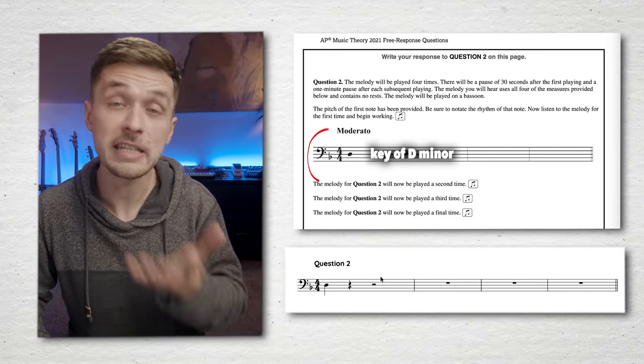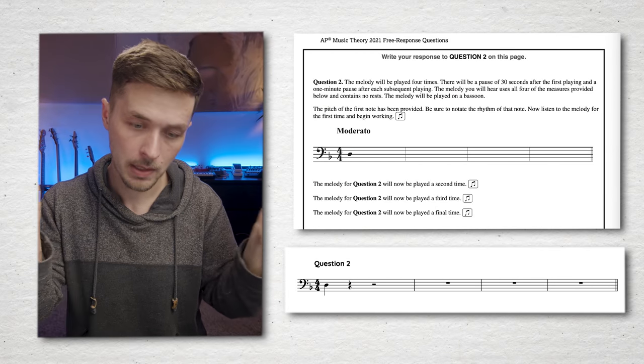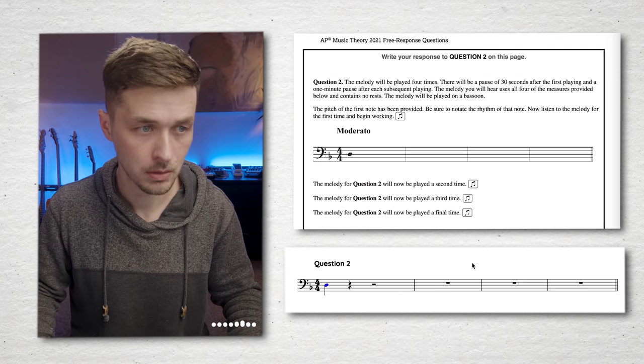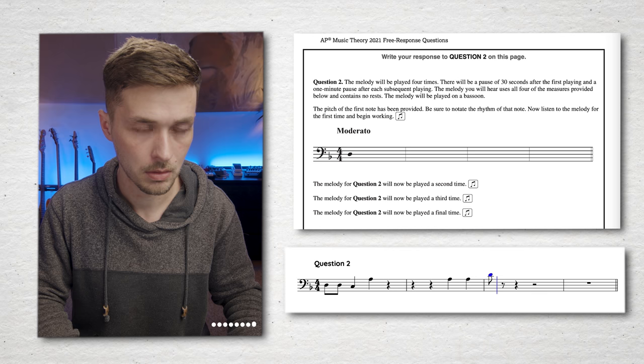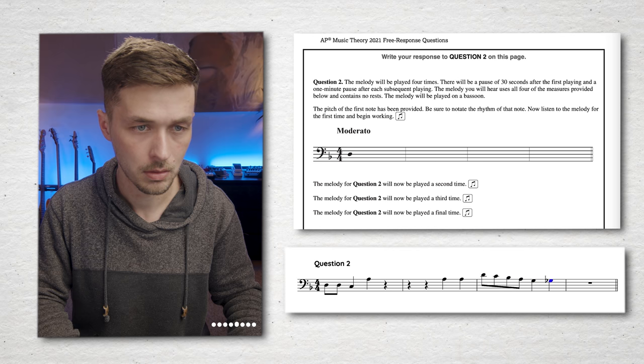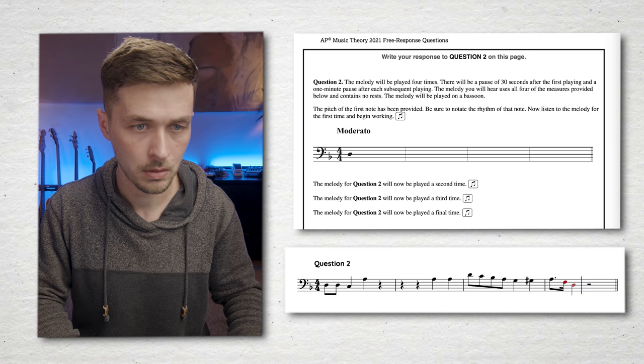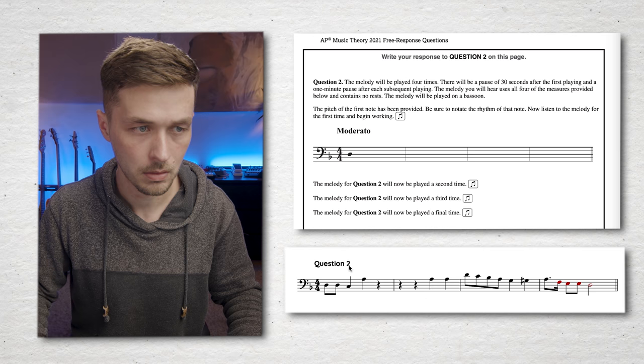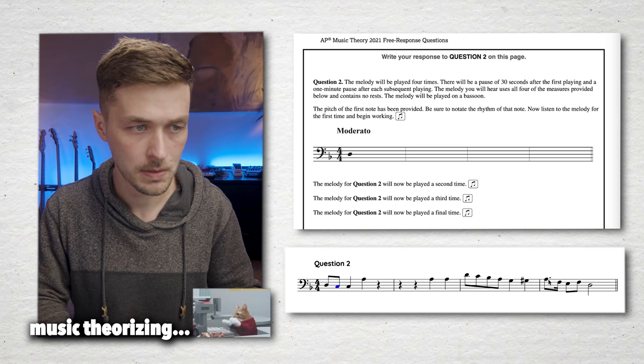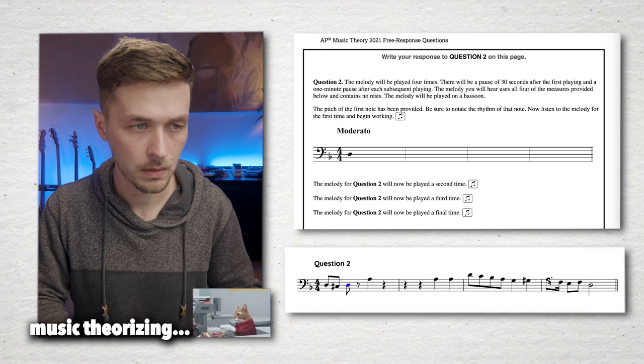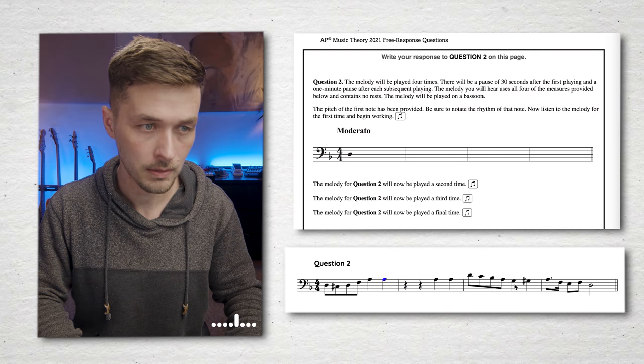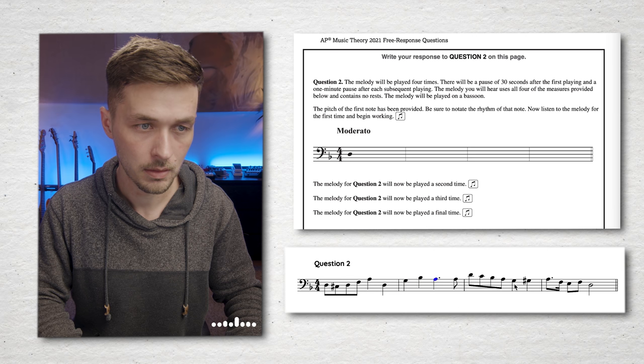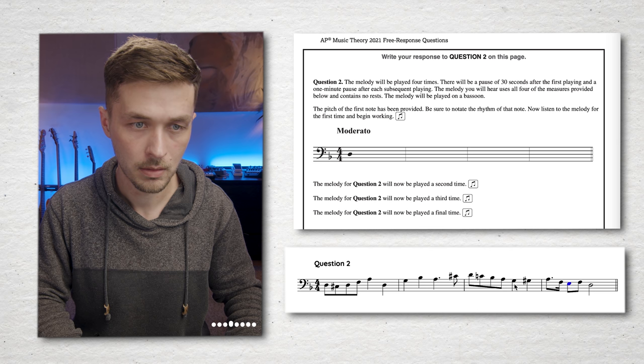Question two. So it looks like we're in the key of D minor because this is a D in the bass clef. That's going to be our tonal center, and we're going to listen to everything and relate it back to that D. Crap. Missed some stuff in here. Let's start going. The melody for question two will now be played a second time. Chill out, man. I'm still working.